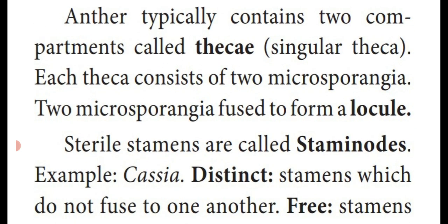Dear students, each anther lobe consists of two compartments, that means chambers — two chambers or rooms — called theca. Singular is theca, plural is thecae. Each anther contains two compartments or chambers known as theca. Each theca consists of two microsporangia. So typically an anther consists of two compartments, and each compartment contains two microsporangia — totally how many microsporangia in an individual anther? Four microsporangia.